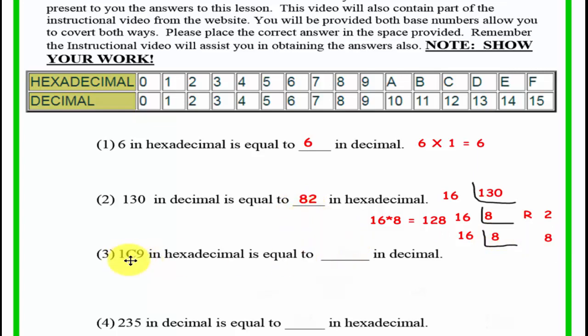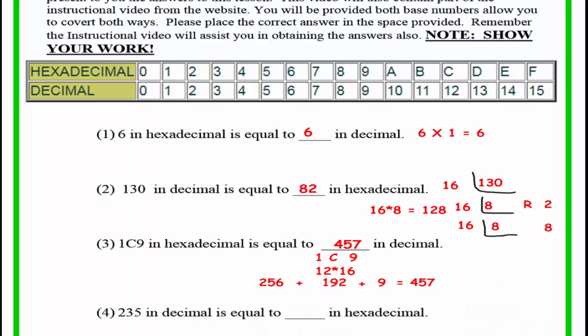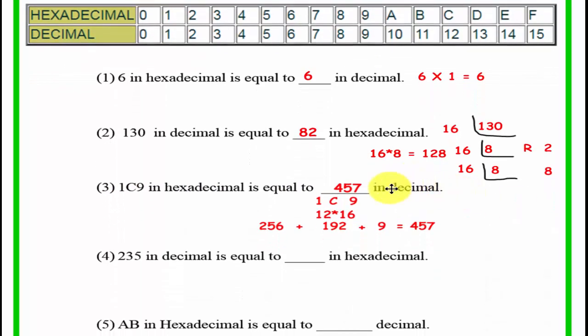Let's look at 1C9 in hexadecimal, and what is it equal to? In hexadecimal, you'll notice it's converted to decimal is 457. Now, remember the first number, which is a 9. 9 times 1 is 9. And then the second number is a C, and what we have for C is a 12, so 12 times 16 is 192.